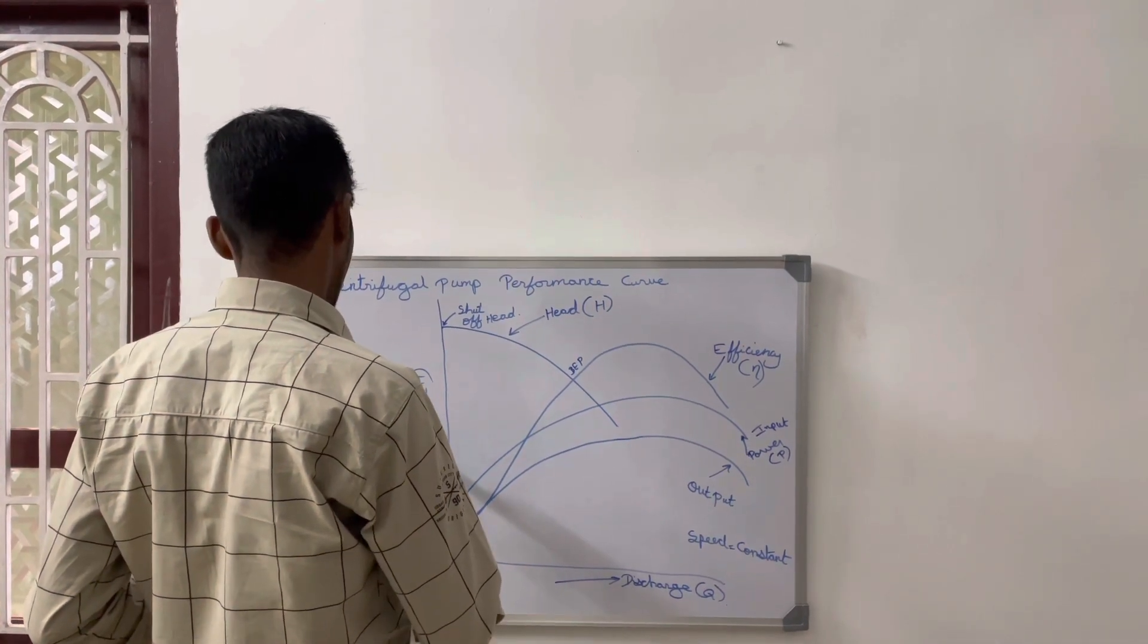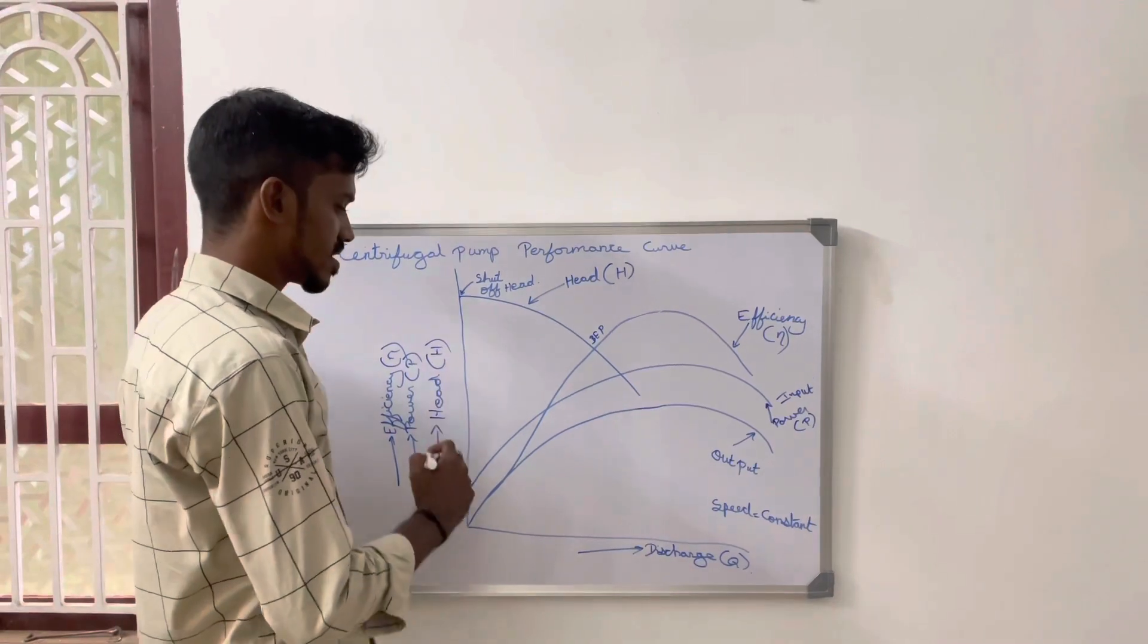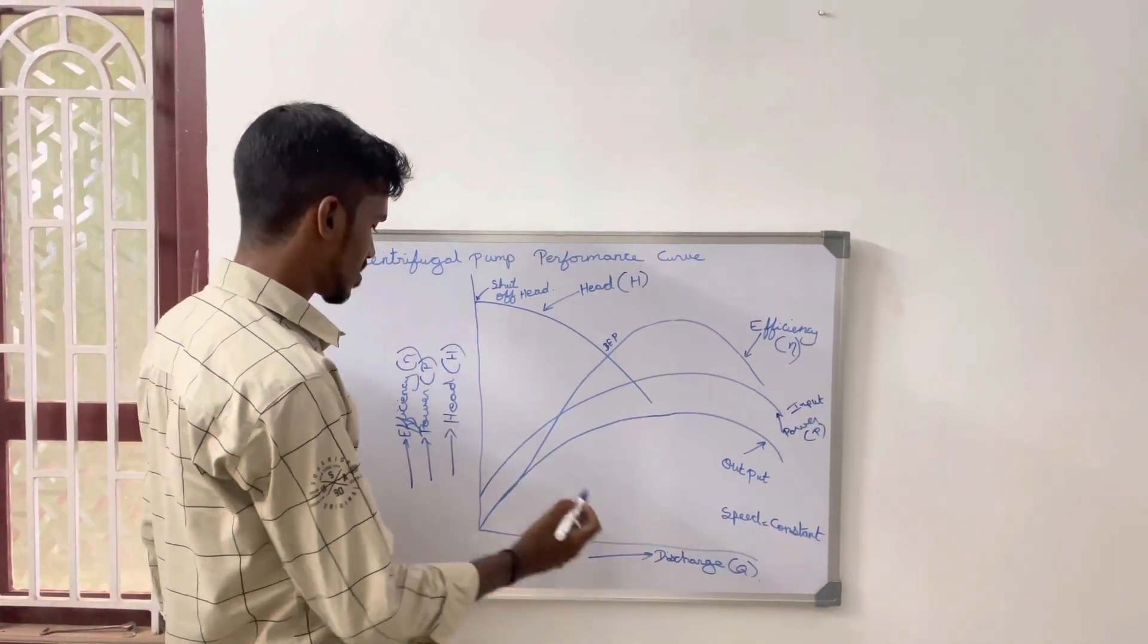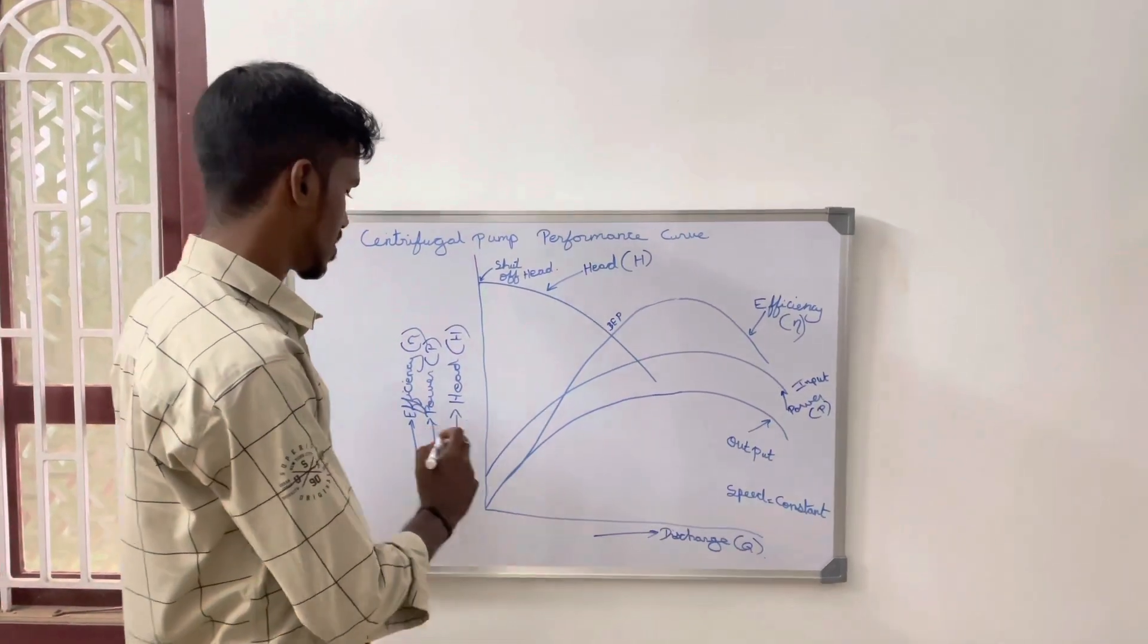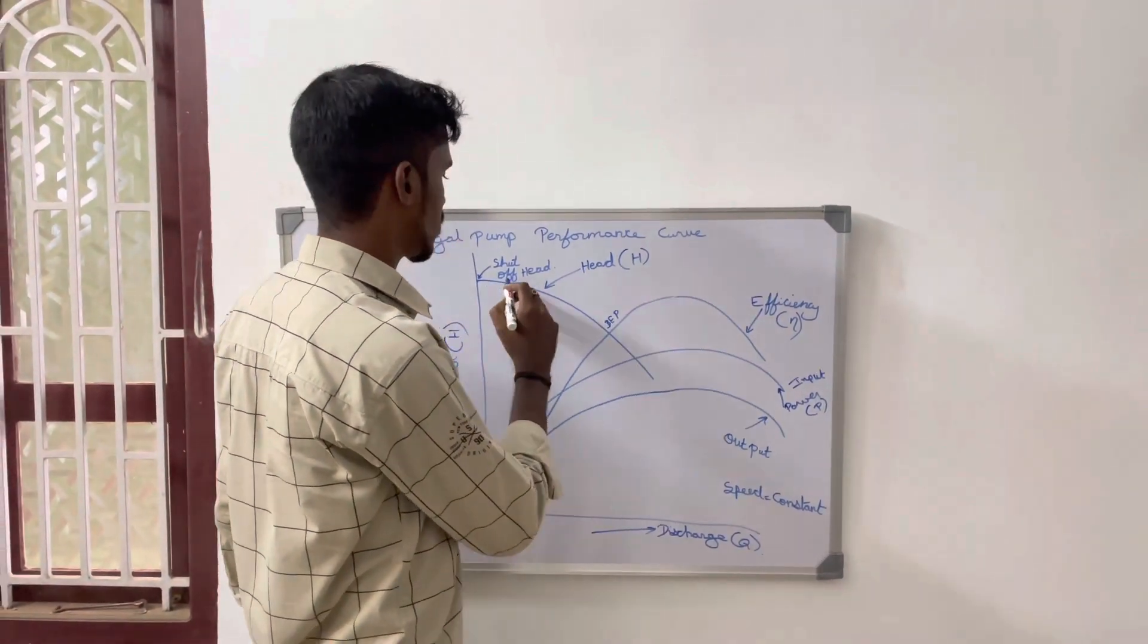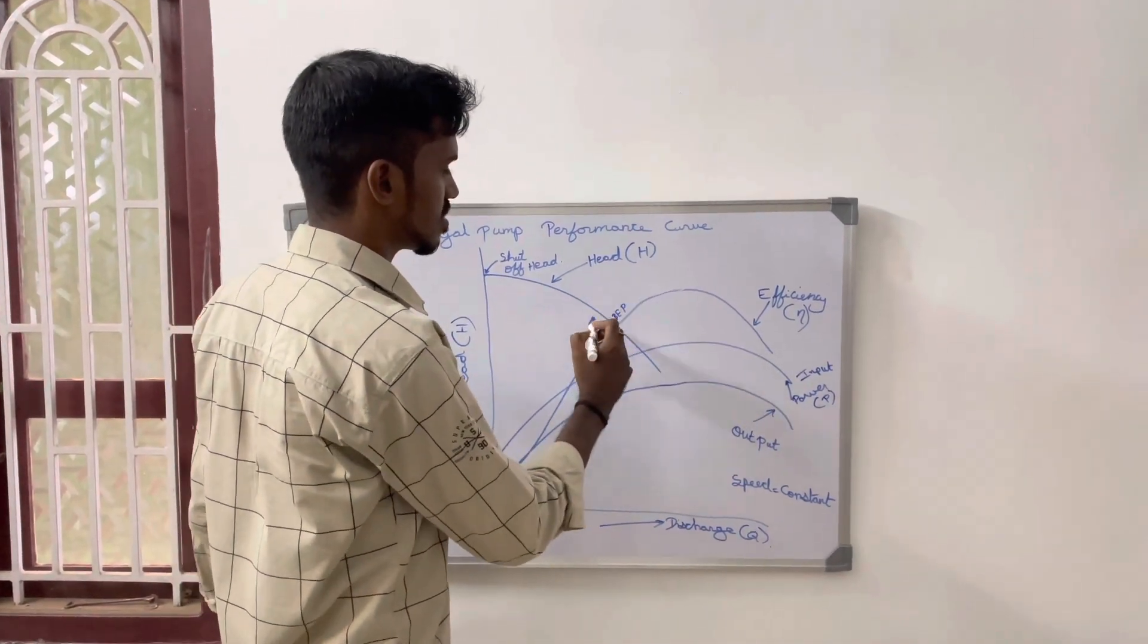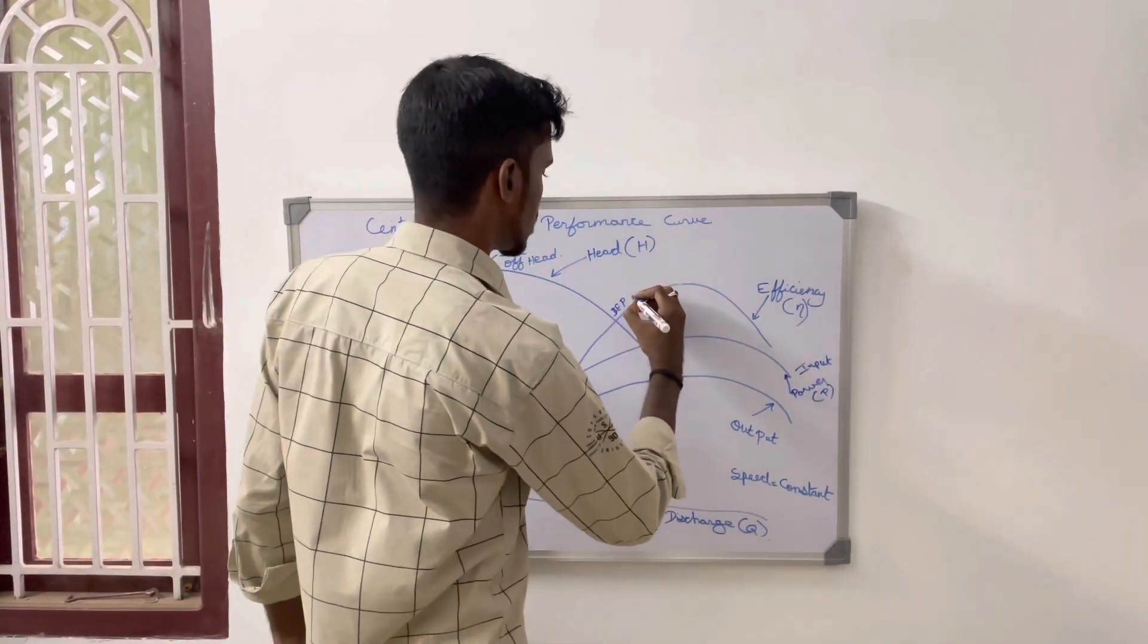This graph shows head versus discharge, power versus discharge, and efficiency versus discharge. This is the shutoff point, this line indicates head, and this is the best efficiency point.